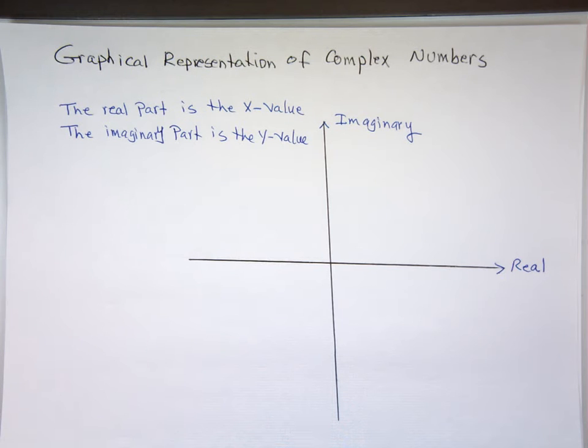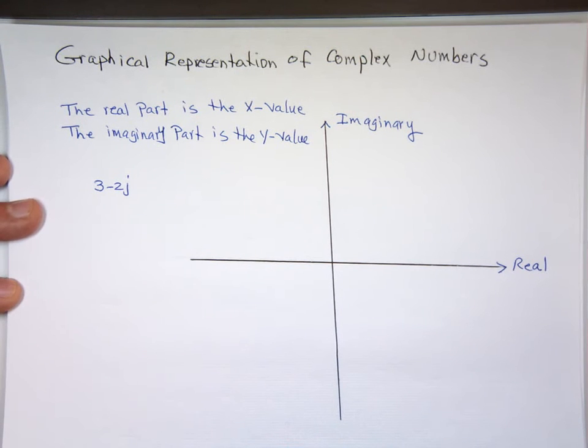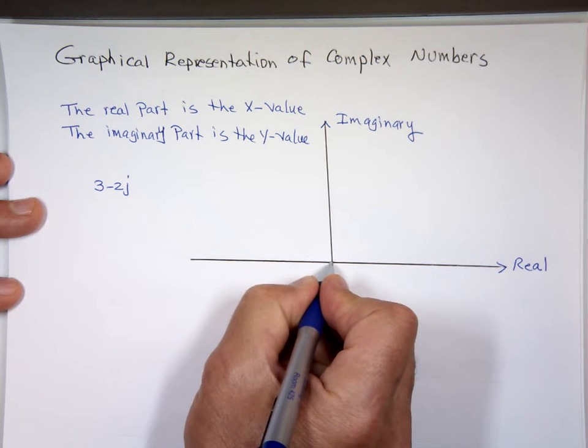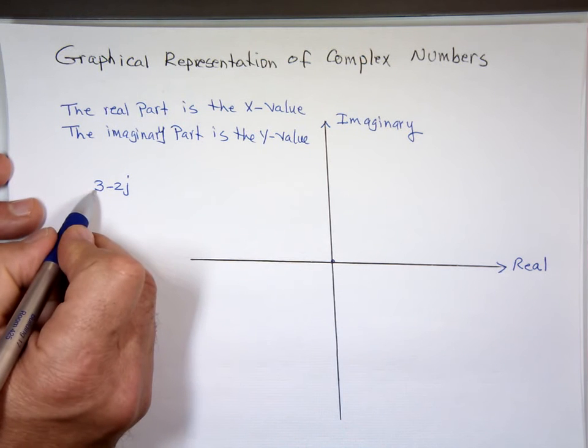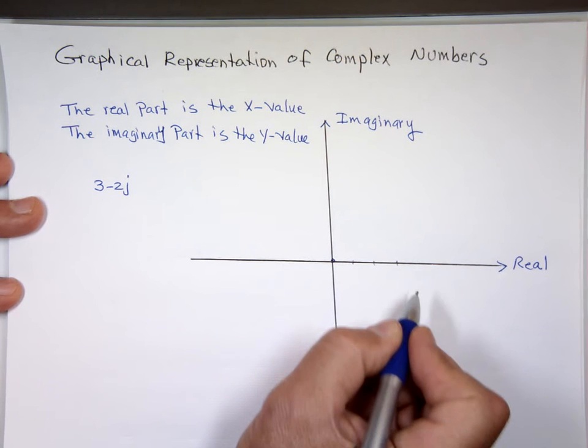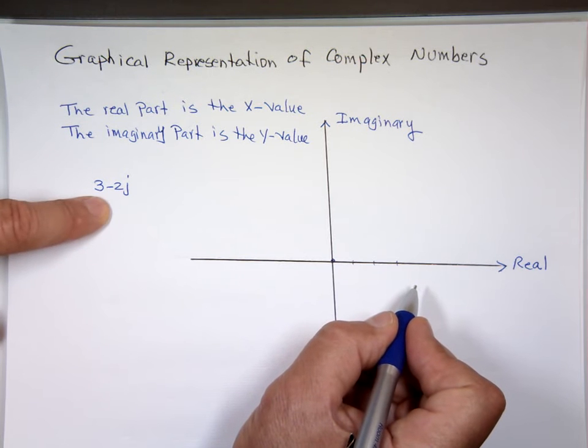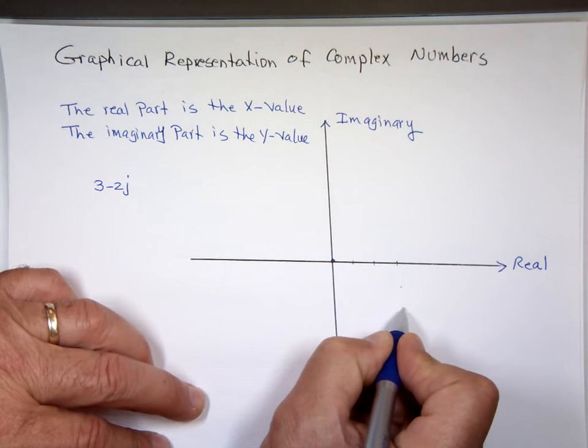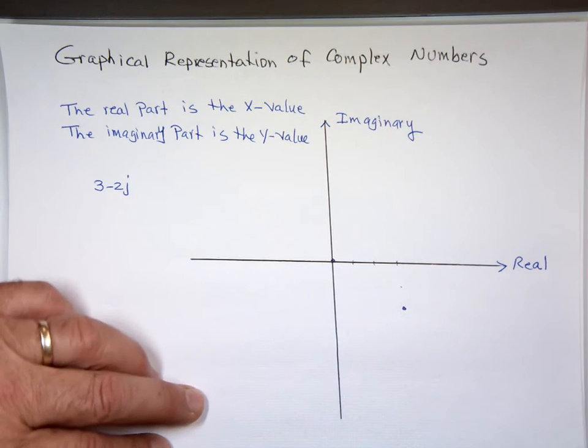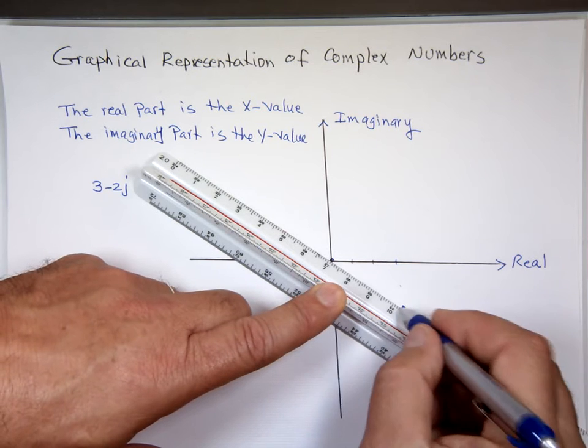So if I want to graph, for example, a vector 3-2j, what does 3-2j look like? You start from the origin. Notice the real portion is what, 3? Go 3 to the right, and how many down? It says down, I didn't say up, why? Because it's negative. You go 2 down. So that will be the graph of 3-2j.